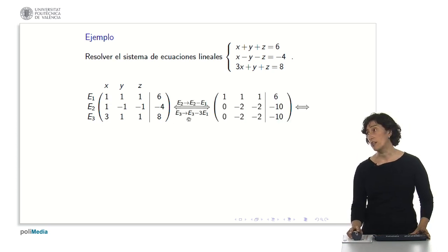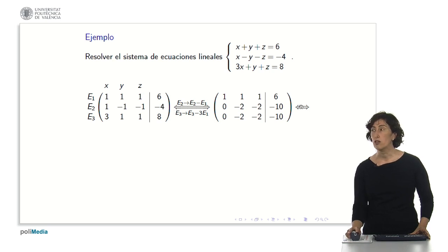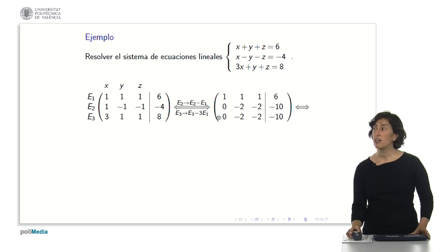Let's do these operations: 1 minus 1 is 0, minus 1, minus 1, minus 2, minus 1, minus 1, minus 2, and minus 4 minus 6 is minus 10. I already have the second equation. I do the corresponding operations to the third and obtain the third equation.